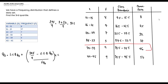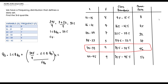Now we extract the necessary details. The lower class boundary at the third quartile is 33.5, so LCB_Q3 = 33.5. The cumulative frequency before the third quartile class is 37, so cf_bQ3 = 37. The frequency at the third quartile class is 9, so f_Q3 = 9.